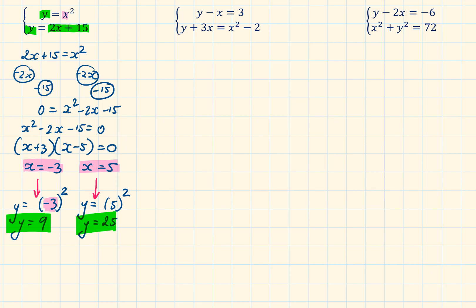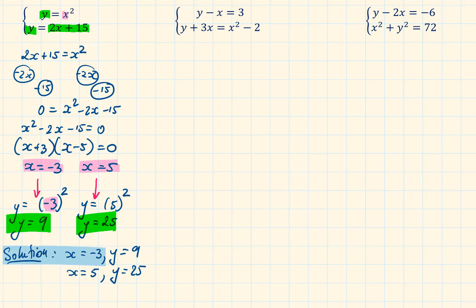Now we've got the other solution and we can write down the final solution. x equals minus 3, y equals 9. And x equals 5, y equals 25. Sometimes a question might ask you to find the coordinate points — in that case, the coordinate points would be (minus 3, 9) and (5, 25).